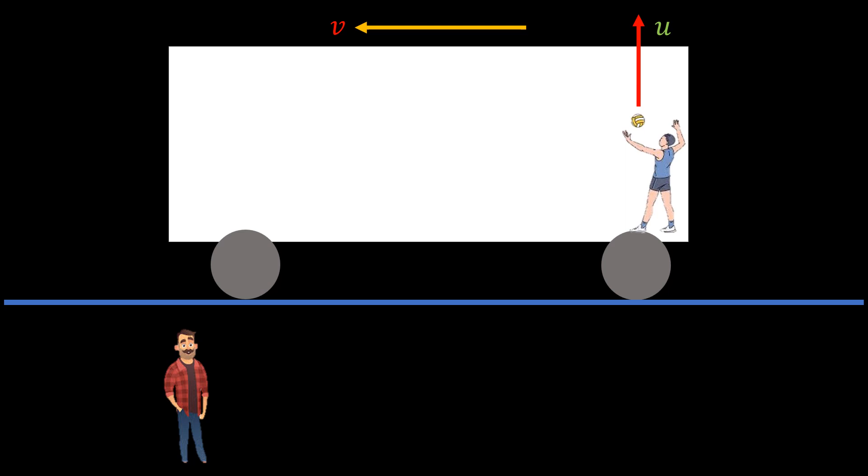So he sees the ball go up vertically and hits the top of the bus, traveling a distance h. So from his frame of reference, he says that the time t0 that it takes the ball to hit the top of the bus is given by the distance traveled divided by the apparent speed u.